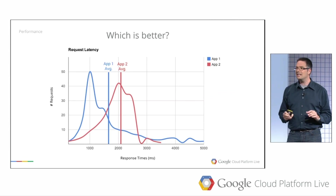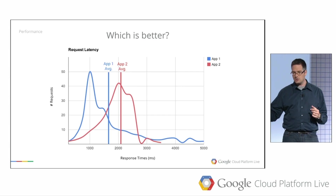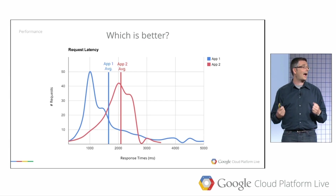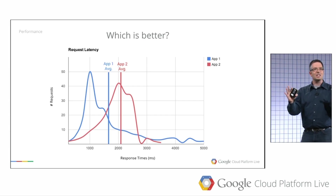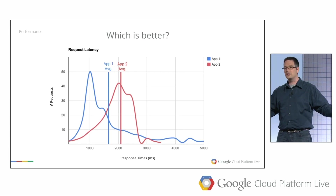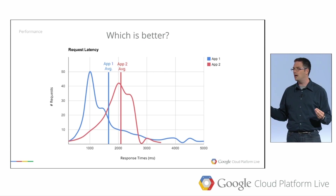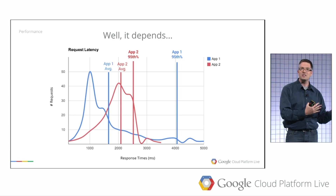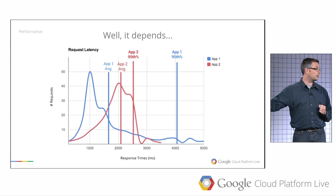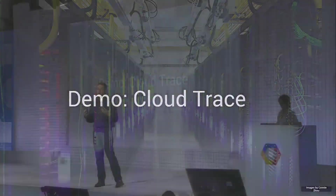To bring this home, consider two applications. Application one has a faster average but a much worse 95th percentile — because it has a long tail latency problem. Application two has a slower average but a much better 95th percentile. We really need to know what the percentile is to help us make the right decision. Averages have nothing to do with user experience here. So let's take a look at a demo of Cloud Trace and how it can help you find that.